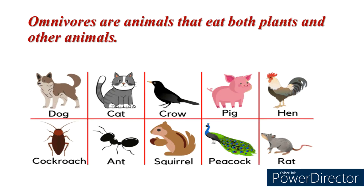Omnivores are animals that eat both plants and other animals. For example, dog, cat, crow, etc.